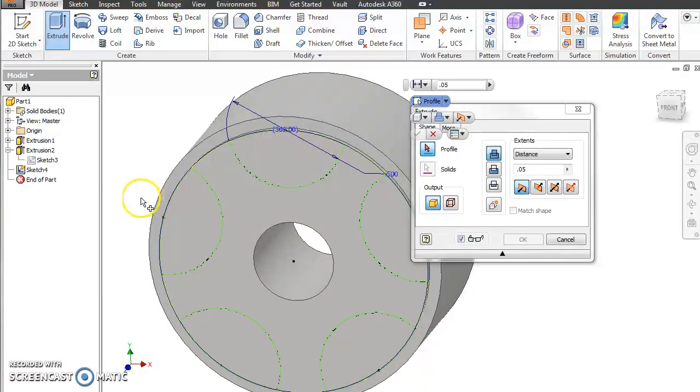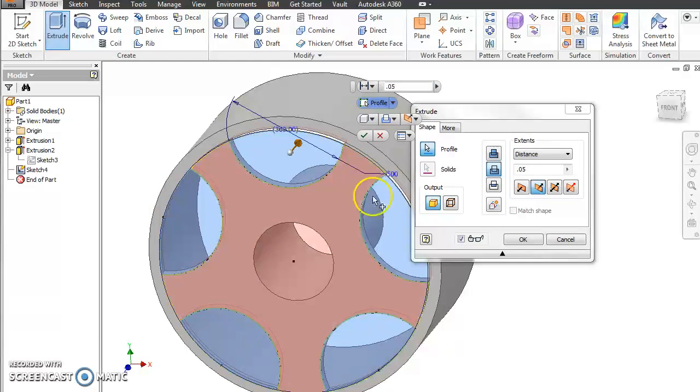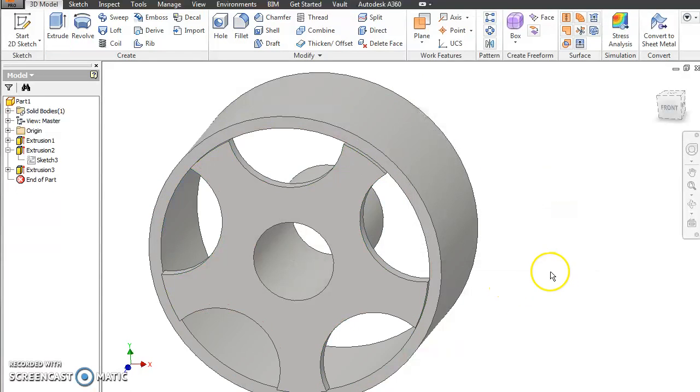And then it's easy here. You should be able to take it from here. Go ahead and tell it to cut. Select your five. Go 50,000s deep. And you have finished the wheel.